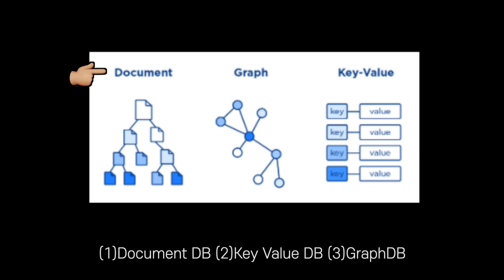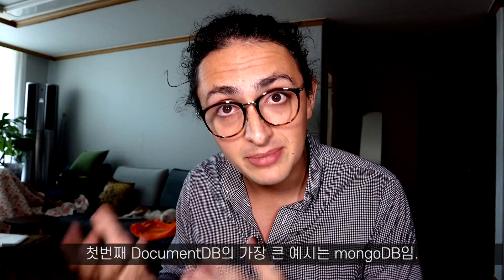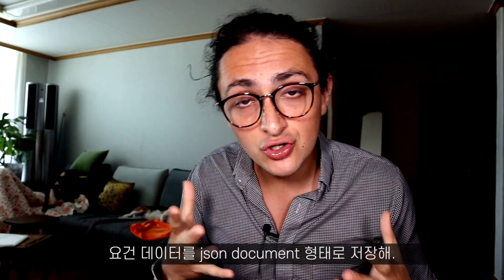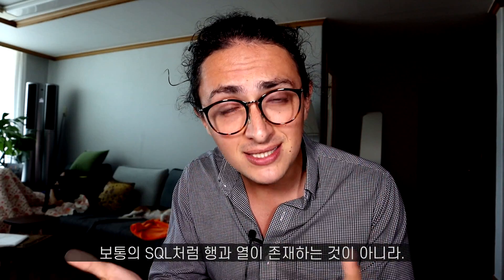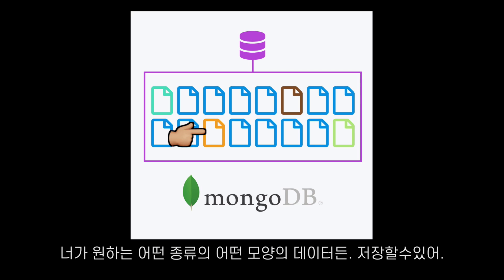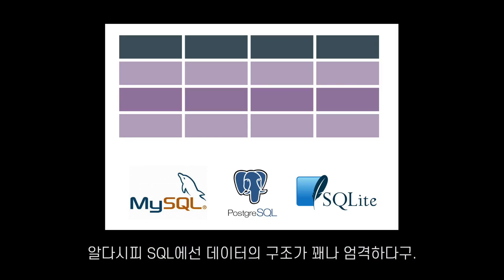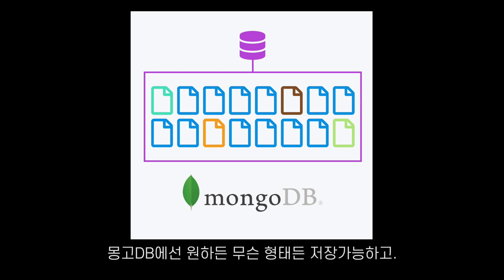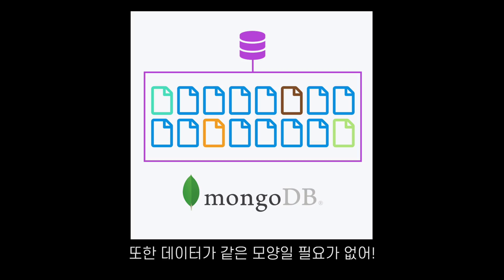An example of a document database is MongoDB — the most famous document database. What it basically allows you to do is save your data as a JSON document. That means you don't have rows and columns like in SQL. A document database allows you to save any sort of data you want with any shape you want. On SQL the structure of the data is very strict with not much room for flexibility, but in MongoDB you can save whatever you want and the data doesn't have to look the same.